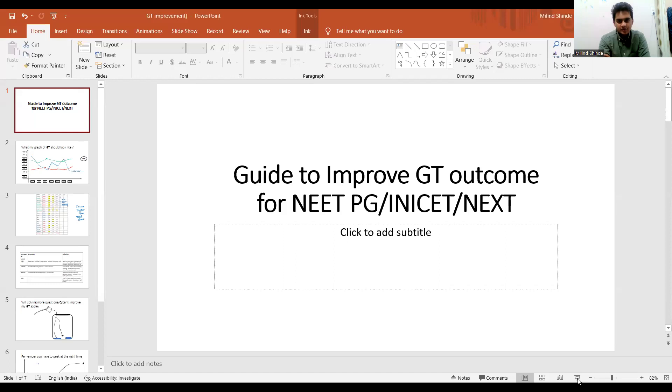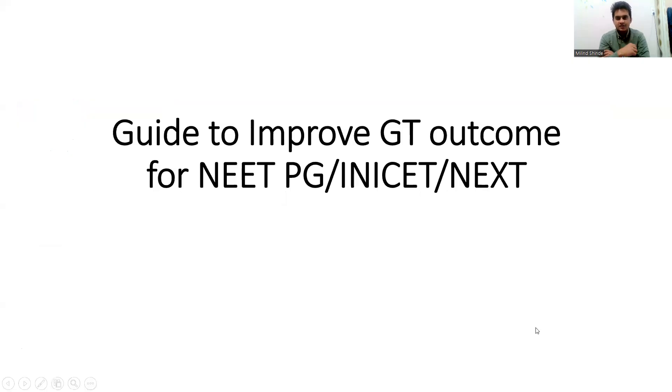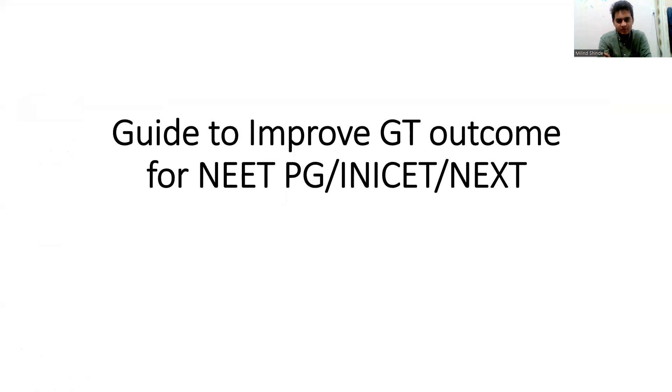So let's start today's discussion. I'm just giving you a small guide. I have released a few videos earlier as well about GT, but still students are very anxious. So I just want to give you a small piece of advice. First thing is what my graph of GT should look like. You know my opinion that I believe you should ideally give three to four GTs in a month, not more than that. GTs are like CRP, C-reactive protein. Single value is insignificant.